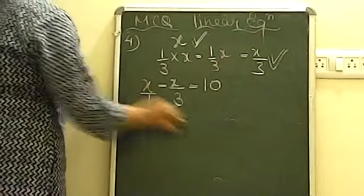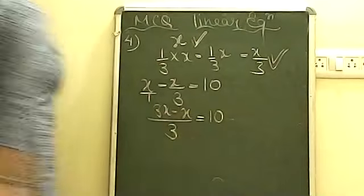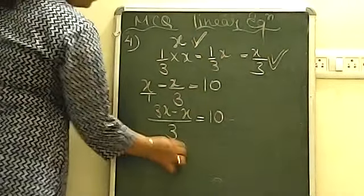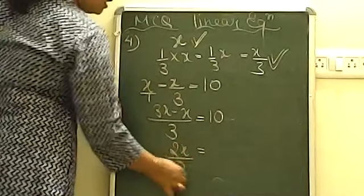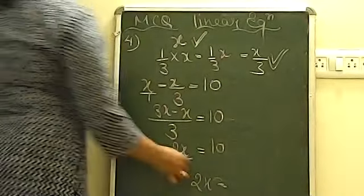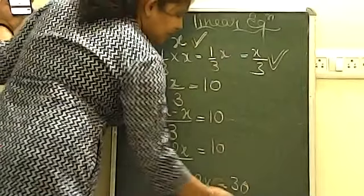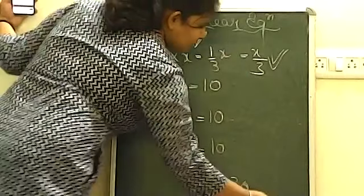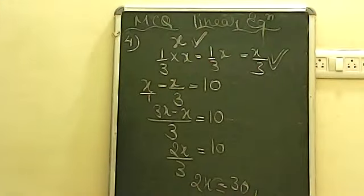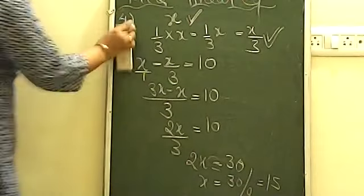Solving: x - x/3 = 10, which gives 3x - x = 30, so 2x = 30. The value of x = 30/2 = 15. So the number is 15.